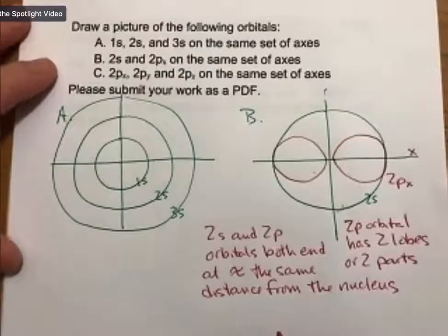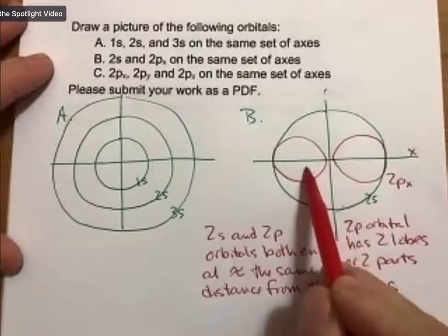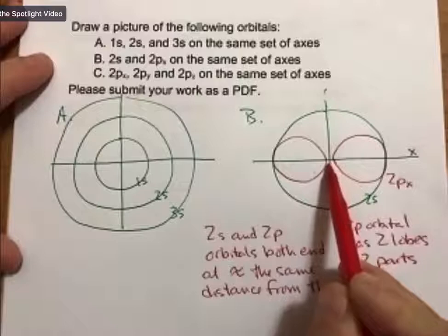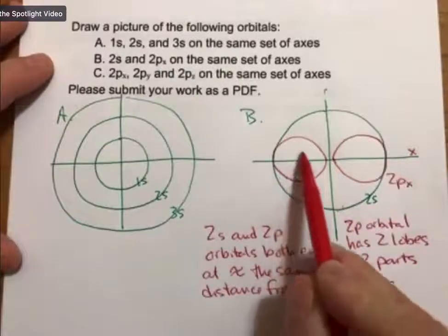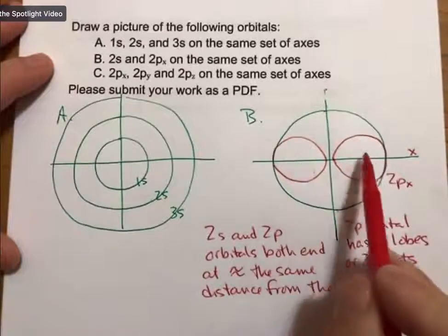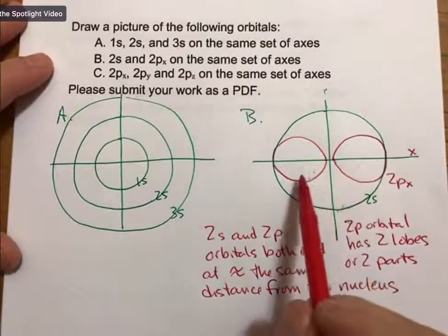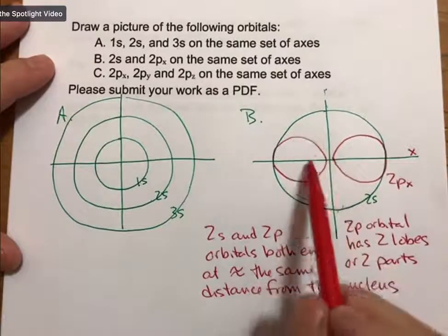One question that could come up is, okay, if this is one orbital and it's true that I've drawn it so that it is not touching the nucleus—the nucleus is at the center portion right here—then how does an electron get from part of the orbital to the other part of the orbital?